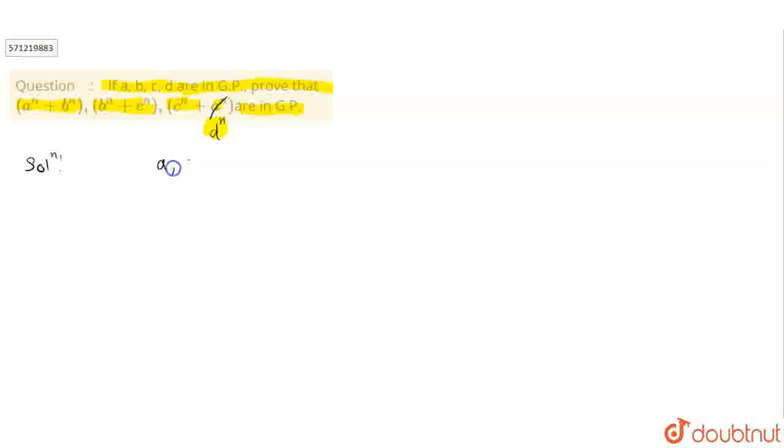Now, we have A, B, C, D in GP. If four numbers are in GP, we can assume A as A1, B as A1 into R, C as A1 into R squared, and D as A1 into R cubed, where R is the common ratio of the GP and A1 is the first term.